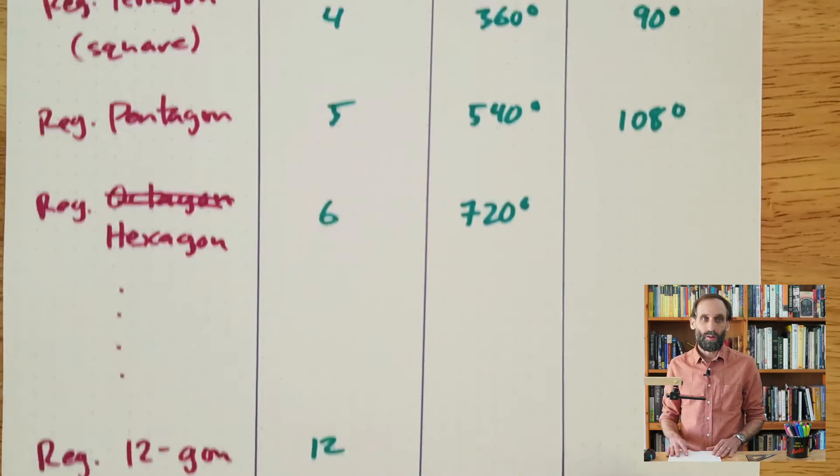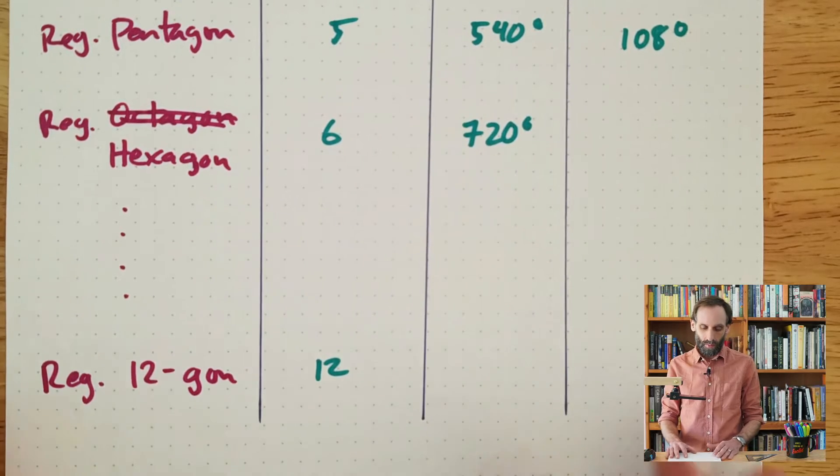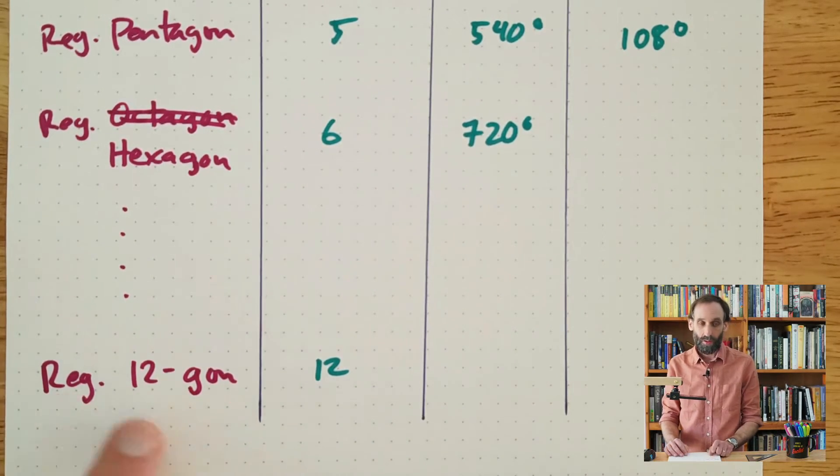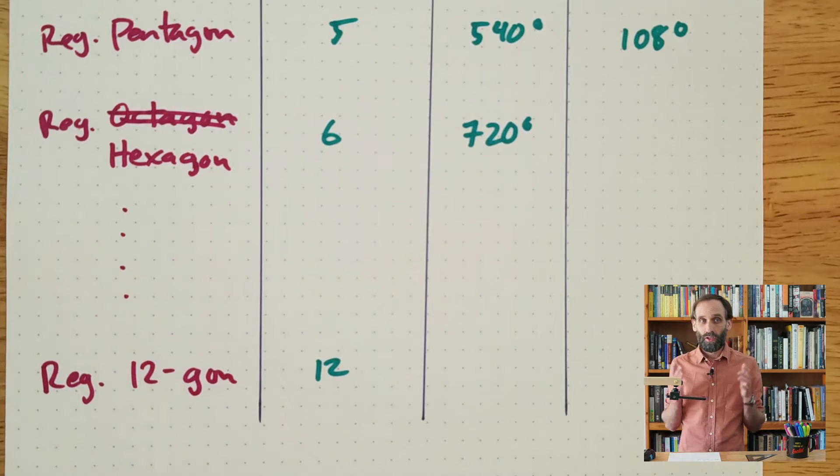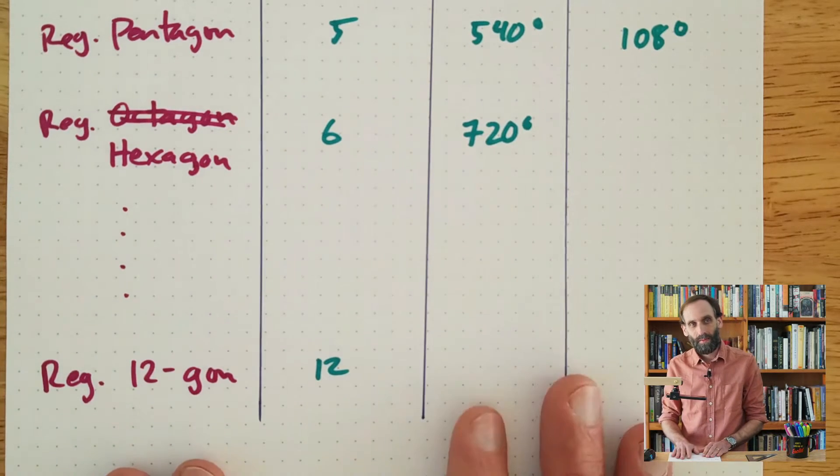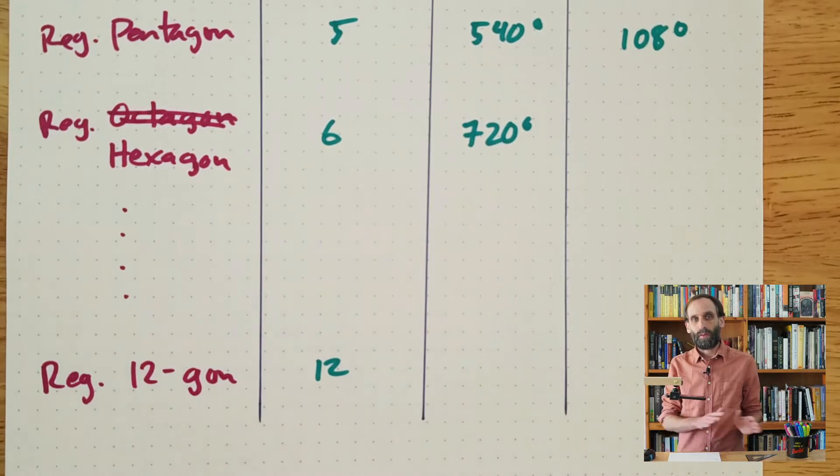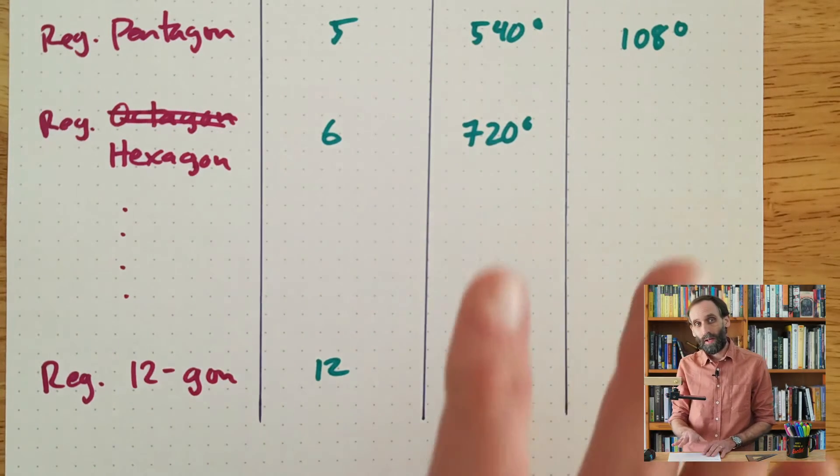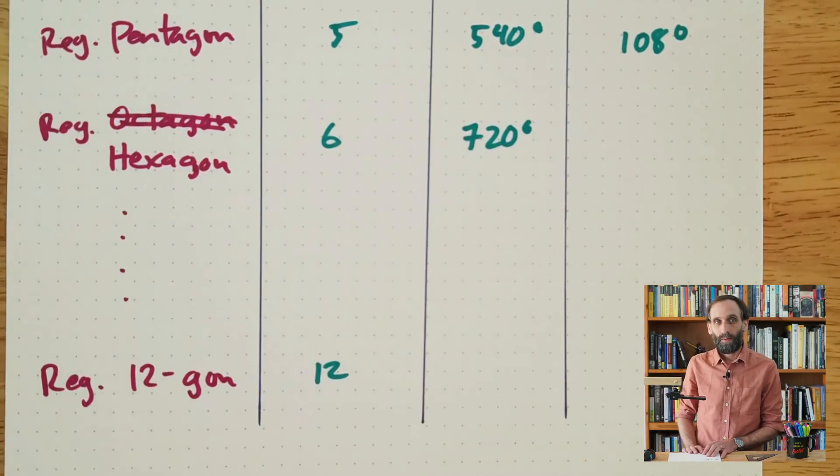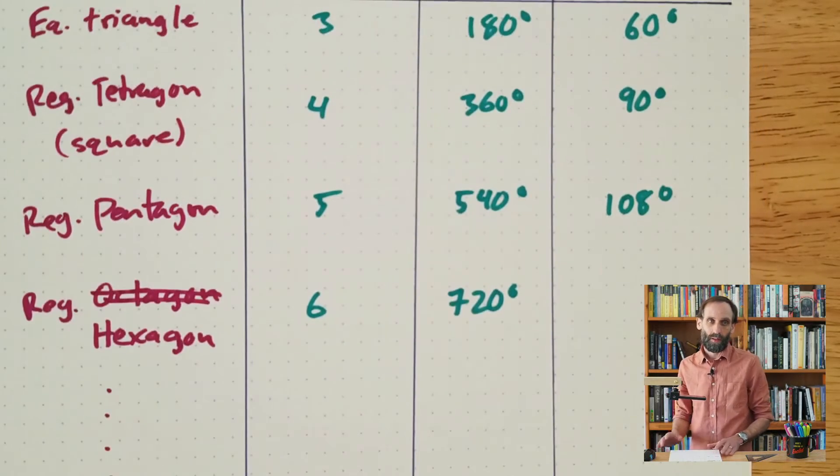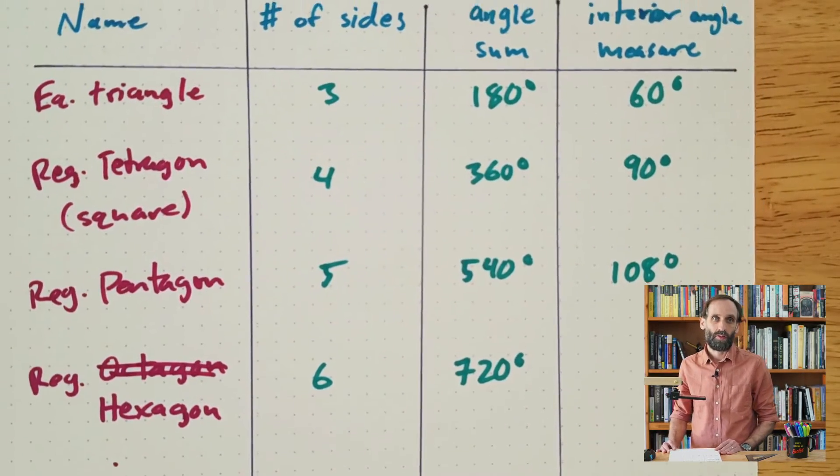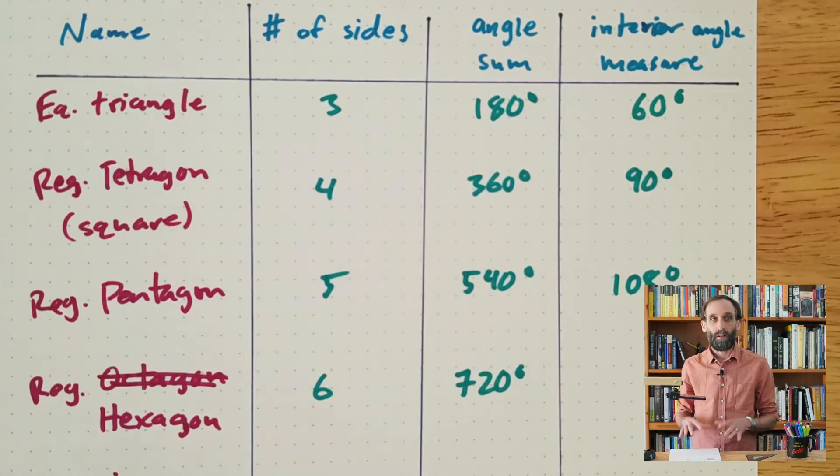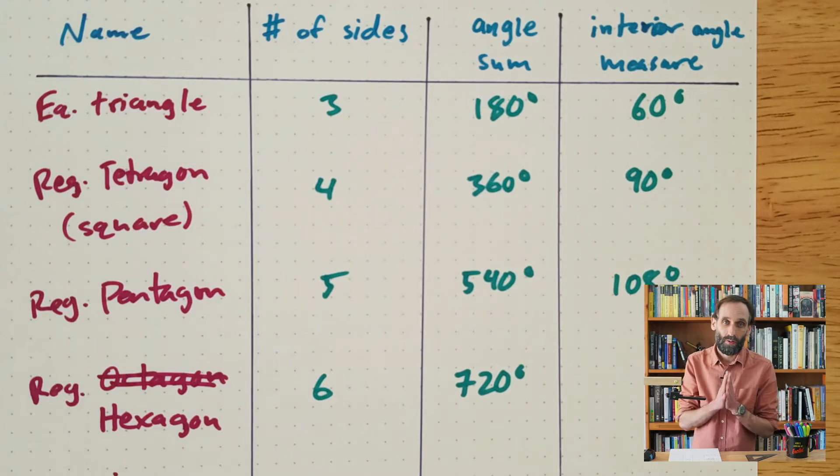I asked you to do the first 10 rows, which would go all the way up to the 12-gon, also called a dodecagon. So if you don't have this table, if you didn't do it from the exercises from lesson number one, go ahead and pause the video and put this table in your notes. You can see the first few entries right here to get you started, but go ahead and fill it out all the way up to the 12-gon or dodecagon.